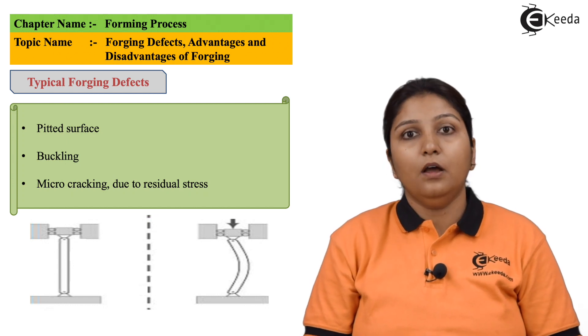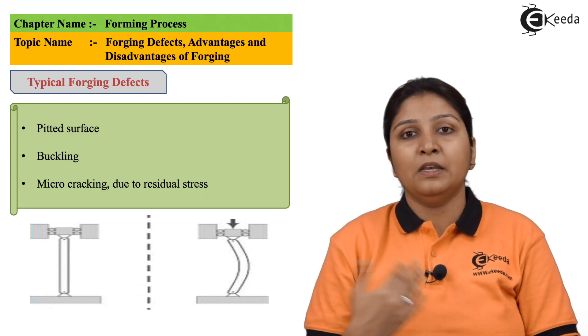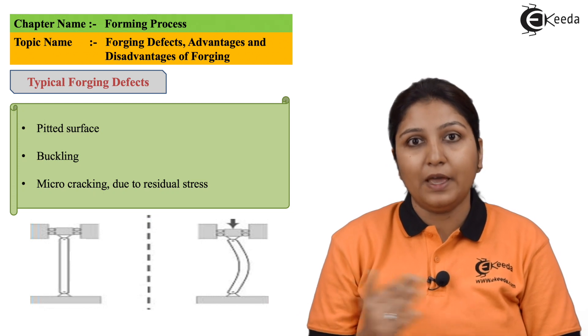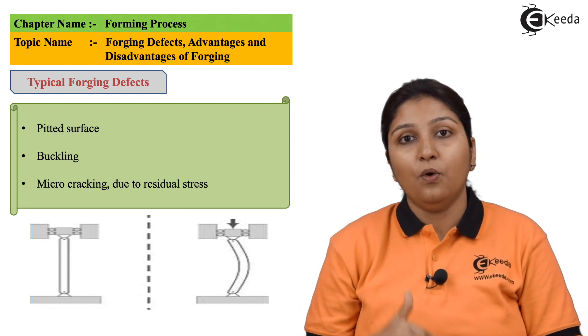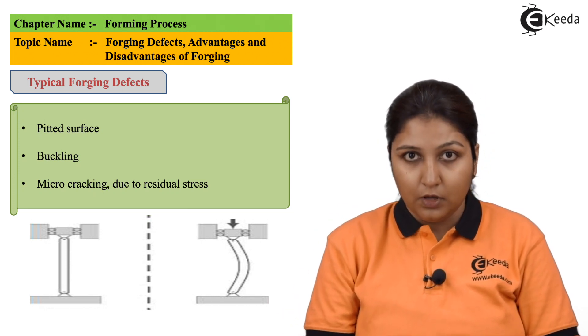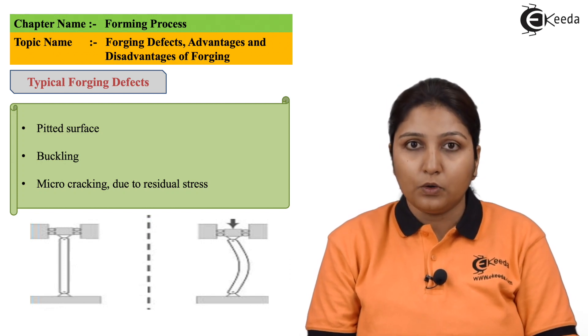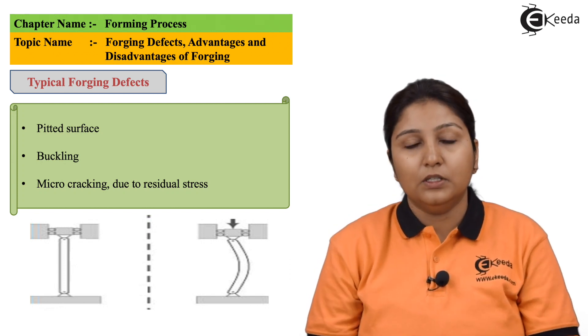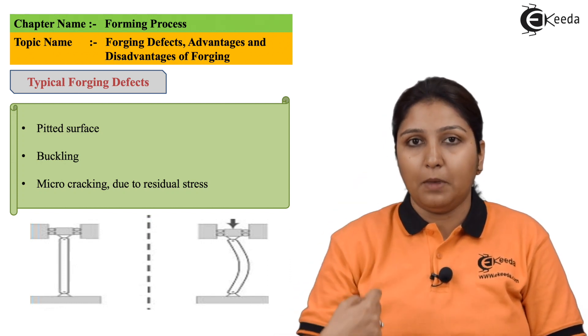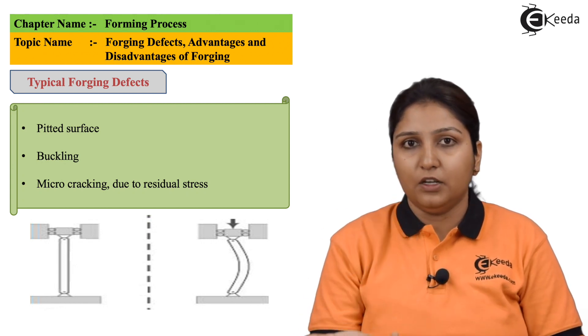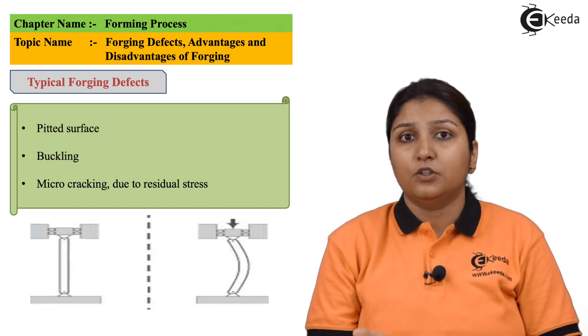When we talk about defects in forged products, you can see many defects as heat is involved, as pressure is involved, hence defects are involved. The first defect which I will talk about is pitted surface. The surface has some pit marks on it during the application of pressure or the application of heat.